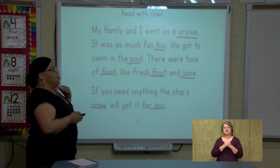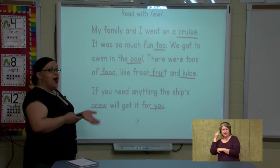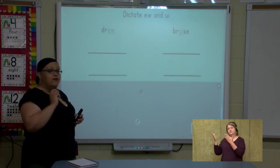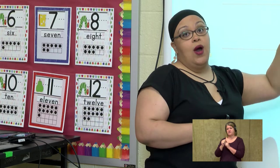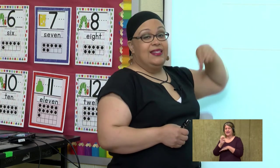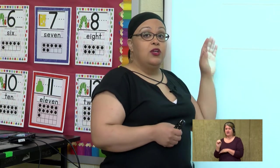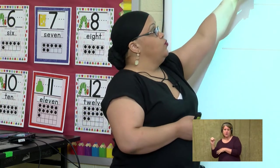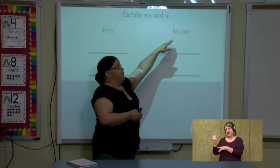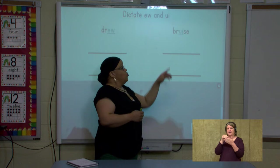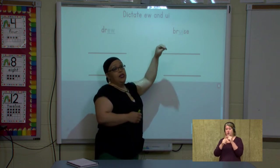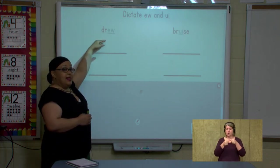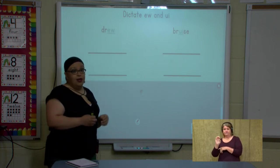Continue practicing reading and writing with those sounds. Today I want to dictate with oo, but I'm going to only focus on two of the sounds — ew and ui. I want you to notice that ew is at the end of words. So today when I say a word, if you hear oo at the end of the word, you're going to write the spelling ew. If you hear the oo in the middle of the word, you're going to write the spelling ui, because ui is in the middle of words — it does not come at the end. Remember, ew is at the end, ui is in the middle.